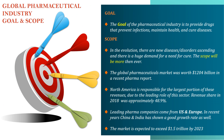The goal of the pharmaceutical industry is to provide drugs that prevent infections, maintain health, and cure diseases. The scope is huge. New disorders and diseases are emerging, creating a huge demand for cures. The global pharmaceutical market is worth around $1,204 billion. North America accounts for the largest portion of revenues — approximately 48.9% in 2018. Leading pharma companies come from the US and Europe, though China and India have shown good growth rates. The market is expected to exceed $1.5 trillion by 2023.